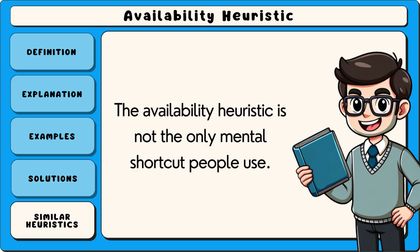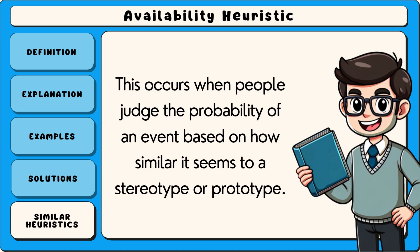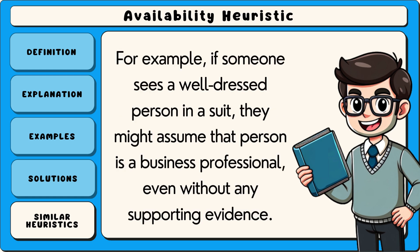The availability heuristic is not the only mental shortcut people use. Another similar heuristic is the representativeness heuristic. This occurs when people judge the probability of an event based on how similar it seems to a stereotype or prototype. For example, if someone sees a well-dressed person in a suit, they might assume that person is a business professional, even without any supporting evidence.